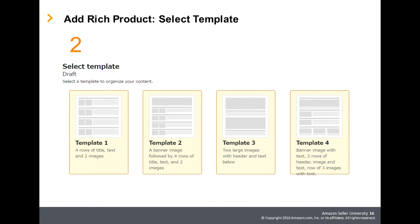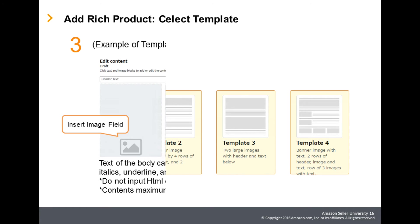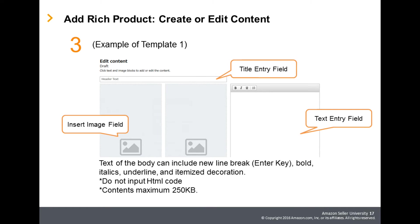After selecting the product you wish to configure settings for, create the Rich Product Description. Rich Product Description provides these four templates. Select a layout appropriate for relaying the product's appeal in accordance with the size and number of images you have on hand. After selecting a template, input the images and words in each of the Insert Image field, Header Text Entry field, and Text Entry field.